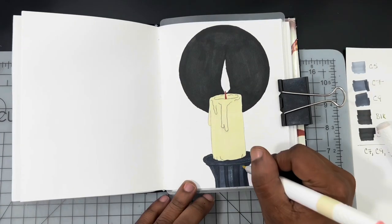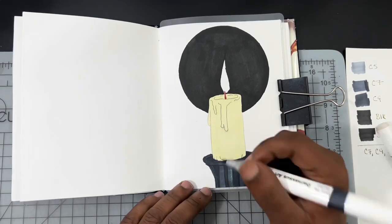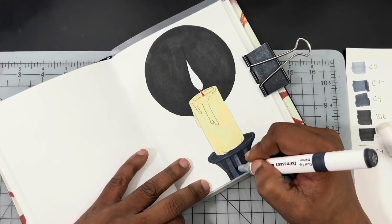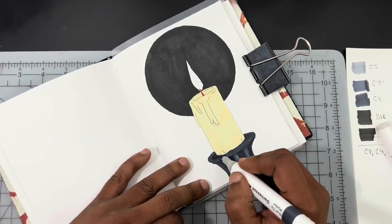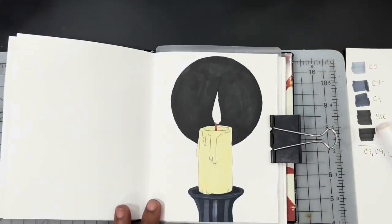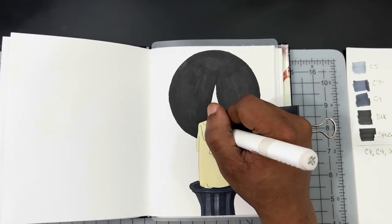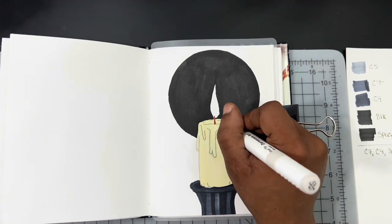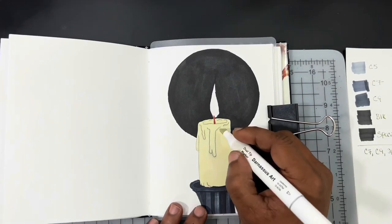Here, what I'm doing is I'm actually using the peach tone that I used on the candle in the holder that it's standing on in order to lighten that alcohol marker. The cool gray 7 and the cool gray 9 honestly were a bit too dark, or actually the cool gray 7 was a bit too dark for the base. I should have went with like a cool gray 5.